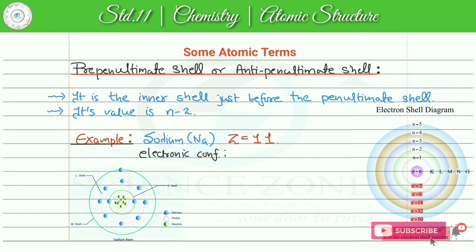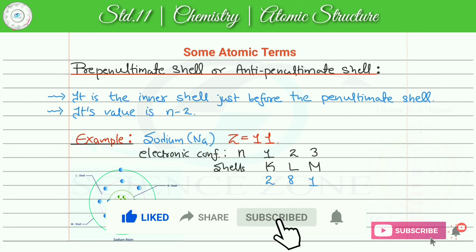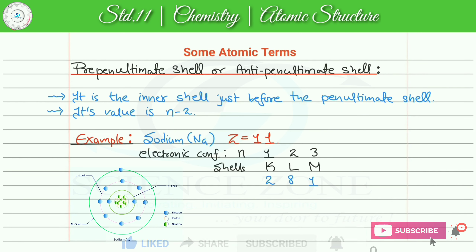Sodium के 11 electrons को arrange करेंगे, then we will need three shells। n की values होंगी 1, 2, 3, और shells होंगे K, L, and M। Electrons को arrange करता हूं: first shell में 2 electrons, second shell में 8, और third shell में 1 electron होगा। This third shell is our last shell, known as ultimate shell, इसकी value है n जो की होगी 3।